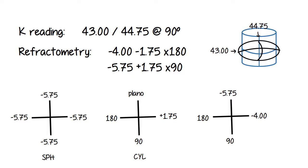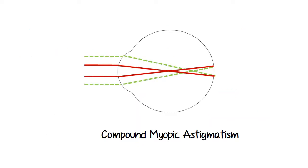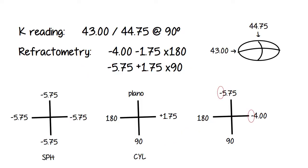And I noticed something right off the bat that this power cross tells me that this patient has compound myopic astigmatism. And how do I know that? By the minus signs in front of both the powers on my power cross.